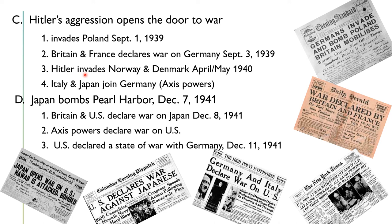Hitler invaded Norway and Denmark in April and May of 1940. Italy and Japan joined Germany to create the Axis powers. Then on December 7th, 1941, Japan bombed Pearl Harbor — Japan opened war on the United States, attacking and bombing Hawaii.